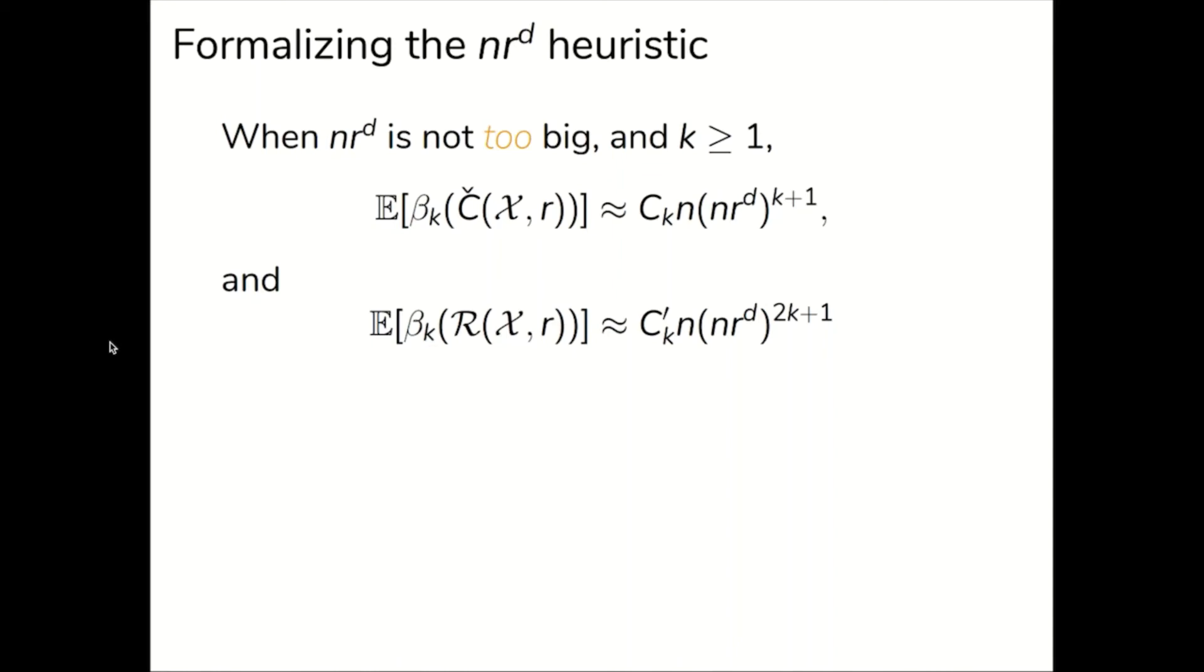To get an understanding of k plus 1 and 2k plus 1, we note that when k is equal to 1 and d is equal to 2, k plus 2 is equal to 3 and represents the least number of points to form a 1 cycle in the Čech complex.